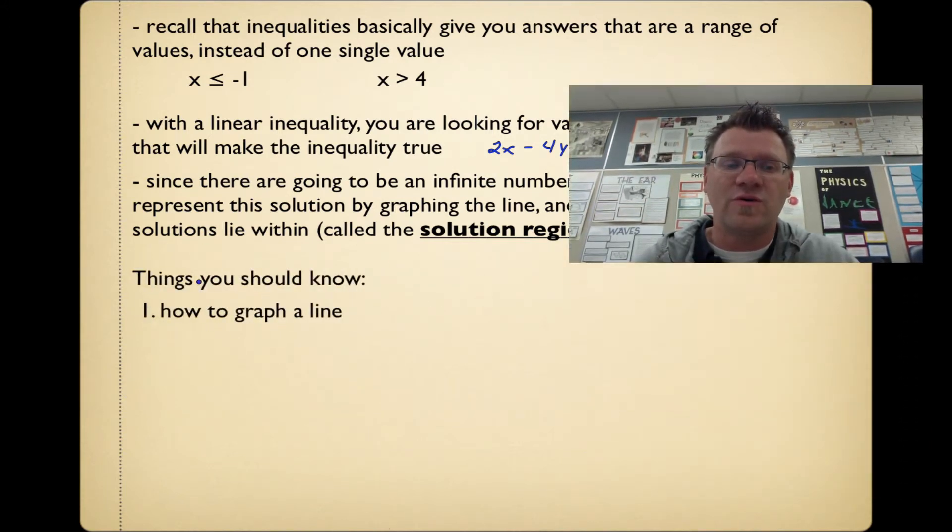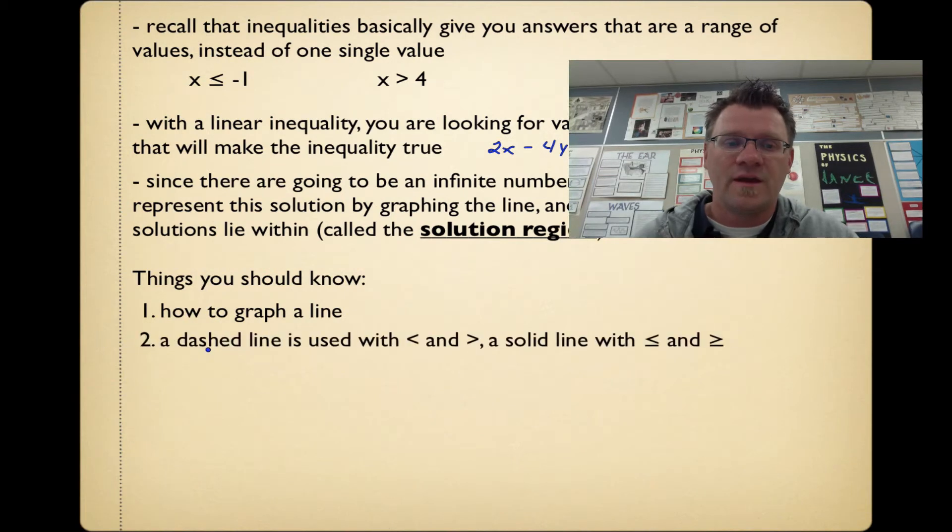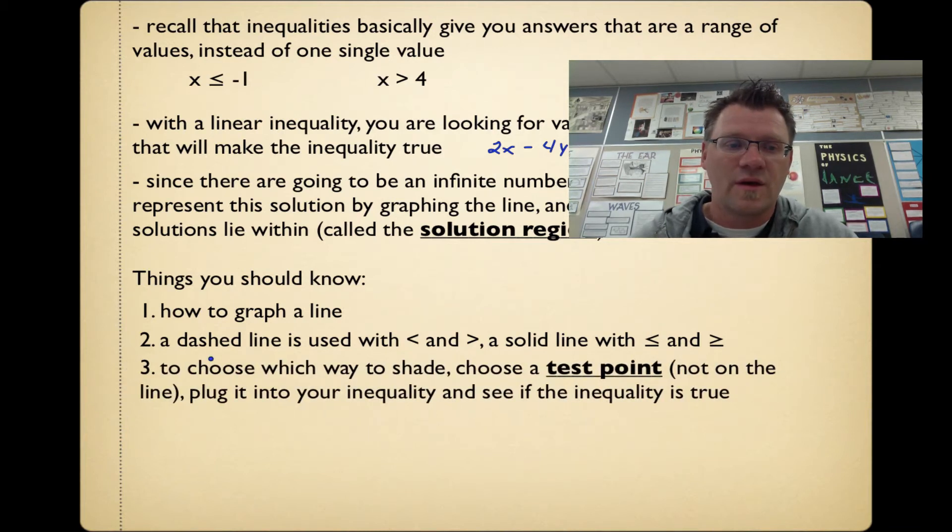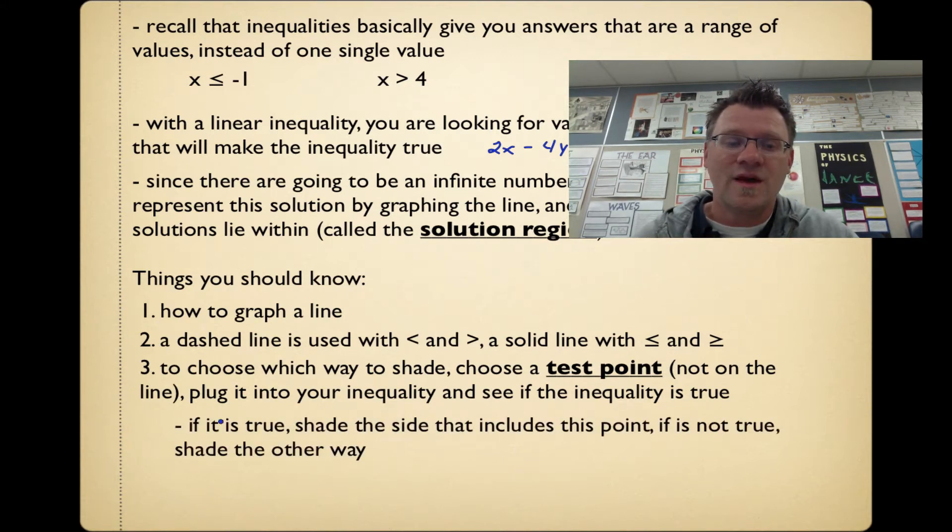Things you should know: you need to know how to graph a line. Number two, you need to know that we're going to use a dashed line with a less than or greater than, instead of that open circle when we're talking about the number line. And we're going to use a solid line when we're talking about less than or equal to and greater than or equal to signs. Number three, you need to choose which way to shade. To do that, you choose a test point that's not on the line. You plug it into your inequality and see if the inequality is true. If it is true, you shade the side that includes that point. If it's not true, then you shade the other way.